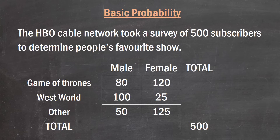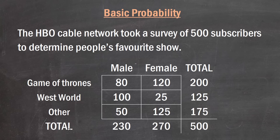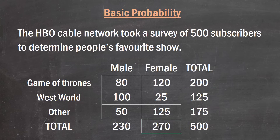Out of 500 subscribers, 80 are male and like Game of Thrones, 120 are female and like Game of Thrones, and so on. Each of these cells we can call joint events, because they depend on classes from two different variables. We can also calculate the total column and row: 200 people preferred Game of Thrones, 125 preferred Westworld, 230 are male and 270 are female.